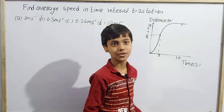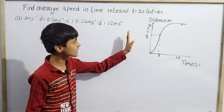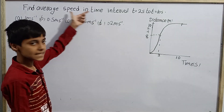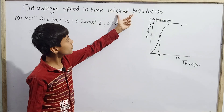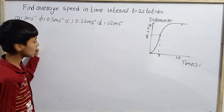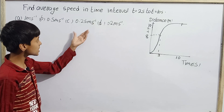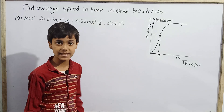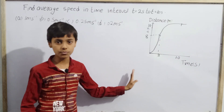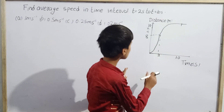This is our first question in this video. The problem gives us a graph and asks us to find the average speed in the time interval from t = 2 seconds to t = 10 seconds. Option A is 1 m/s, option B is 0.5 m/s, option C is 0.25 m/s, and option D is 0.2 m/s.